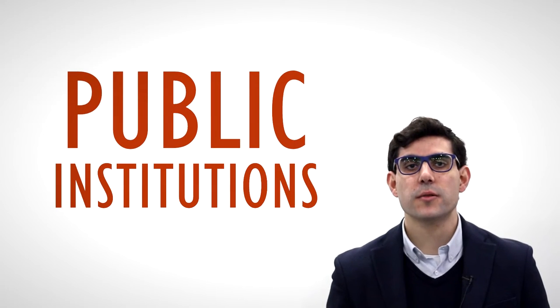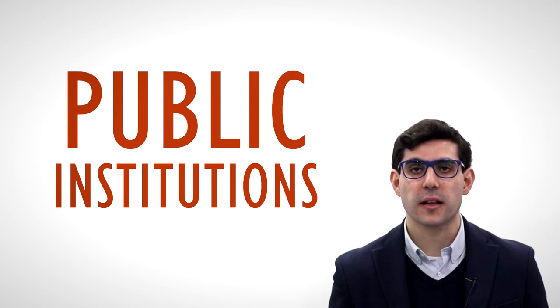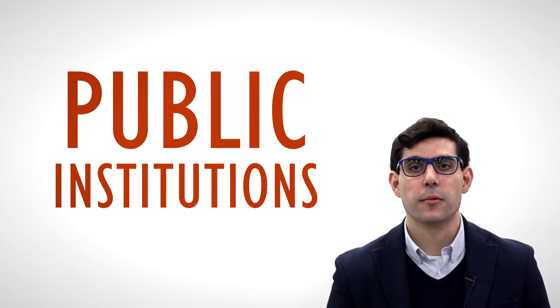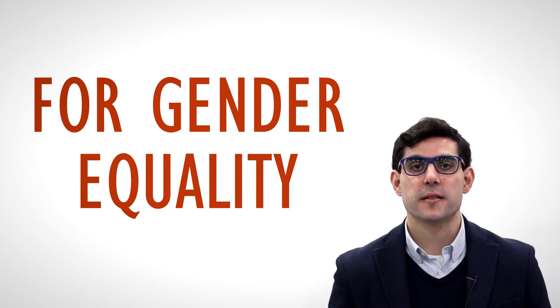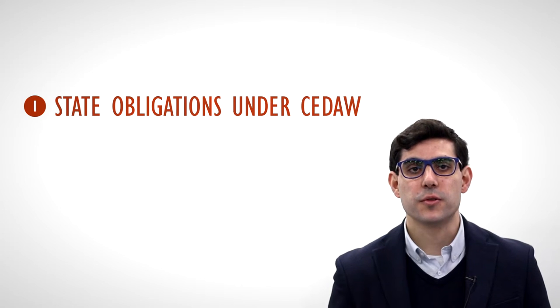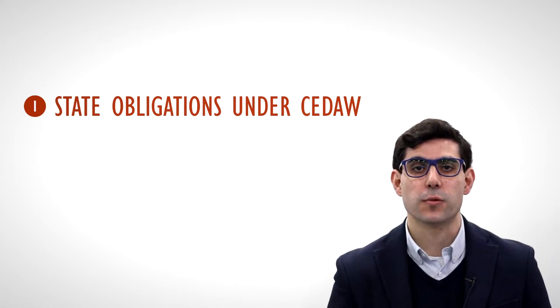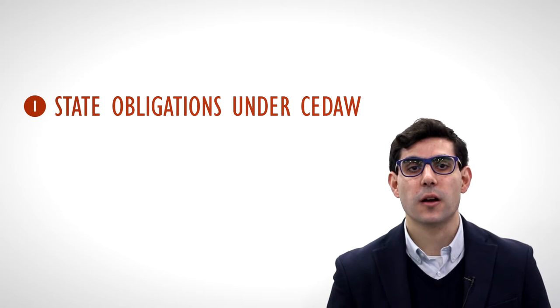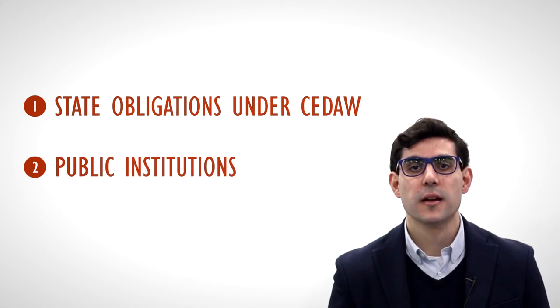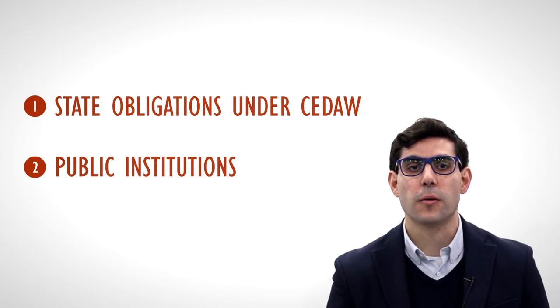In this class, we will provide an overview of the main public institutions that countries have created at a domestic level in order to fulfil their international commitments regarding gender equality. After revisiting some of the obligations States have pursuant to the Convention for the Elimination of All Forms of Discrimination Against Women, we will identify the different kinds of institutional arrangements they have made in order to comply with it.